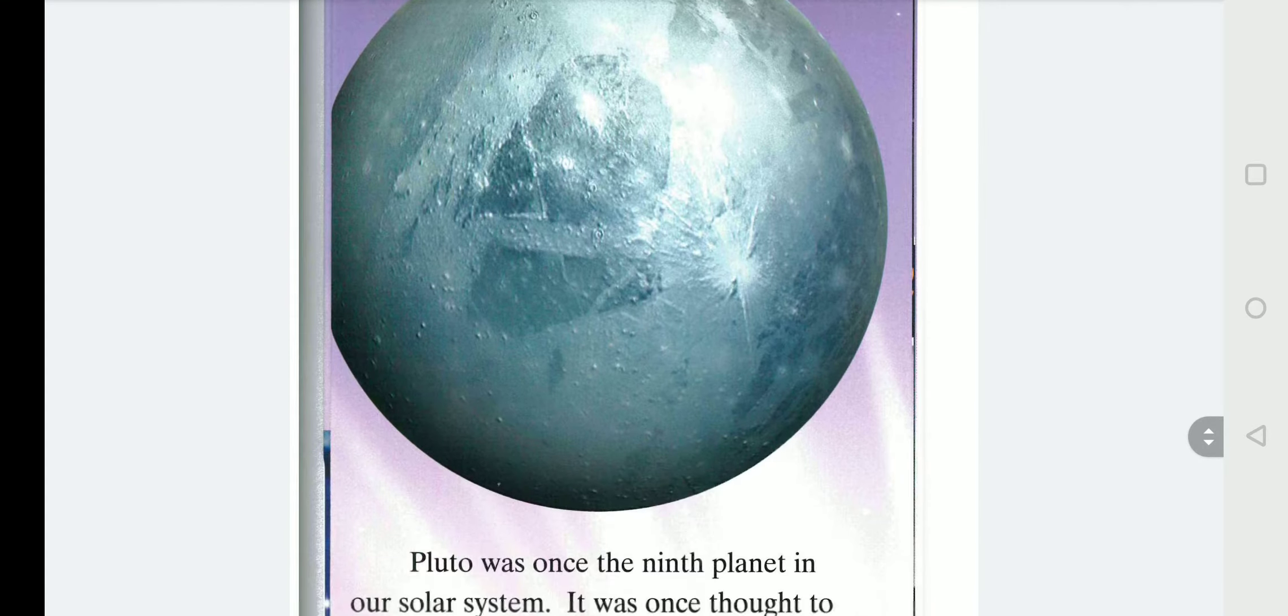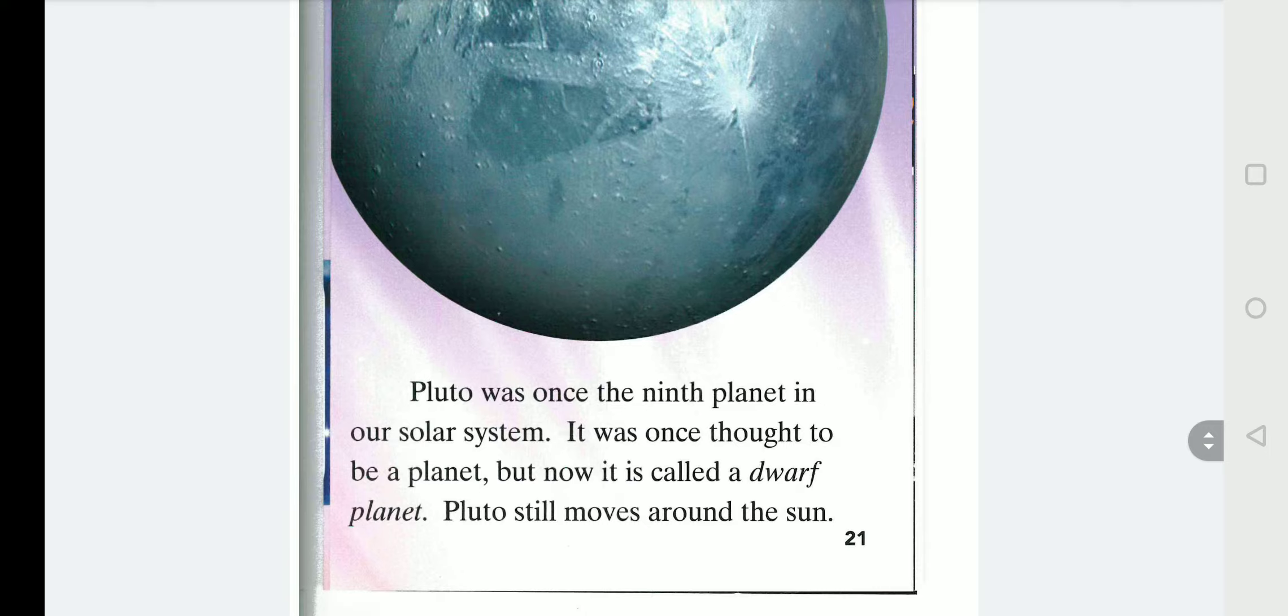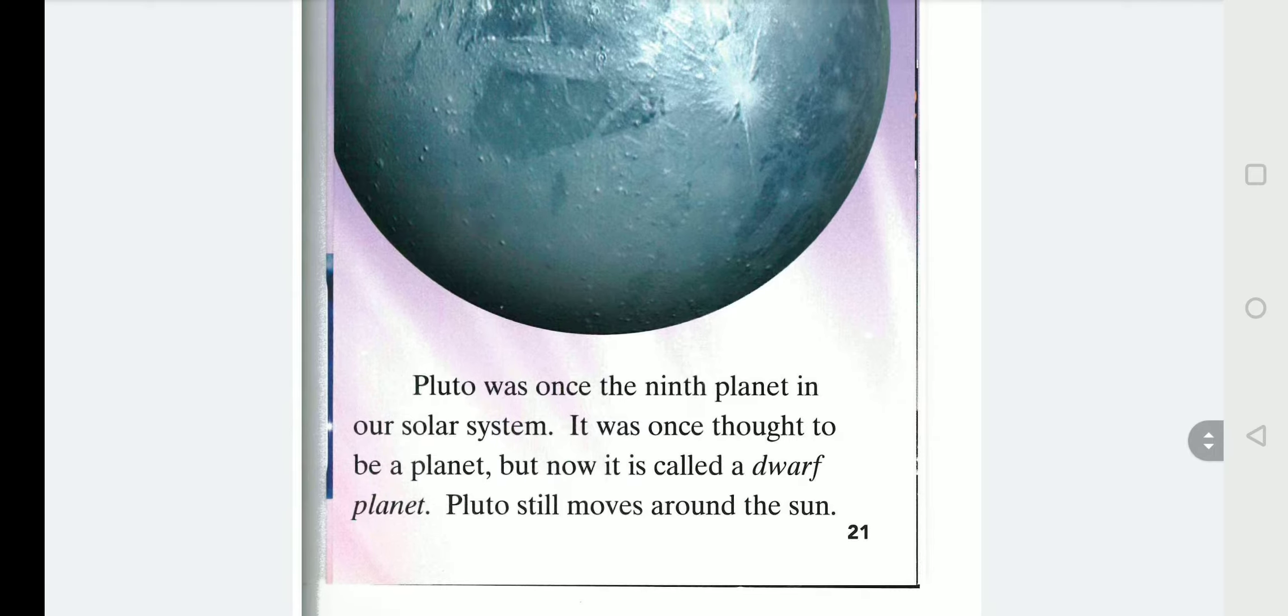Pluto. Pluto was once the ninth planet in our solar system. It was once thought to be a planet, but now it is called a dwarf planet. Pluto still moves around the Sun.